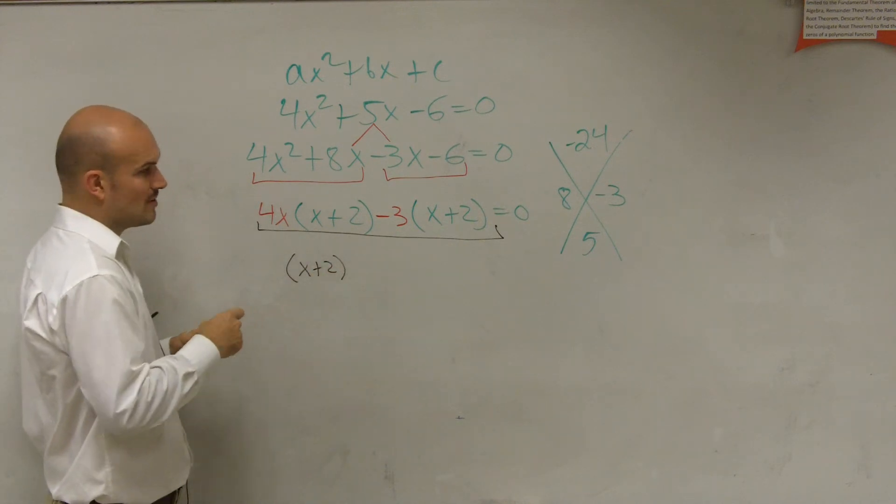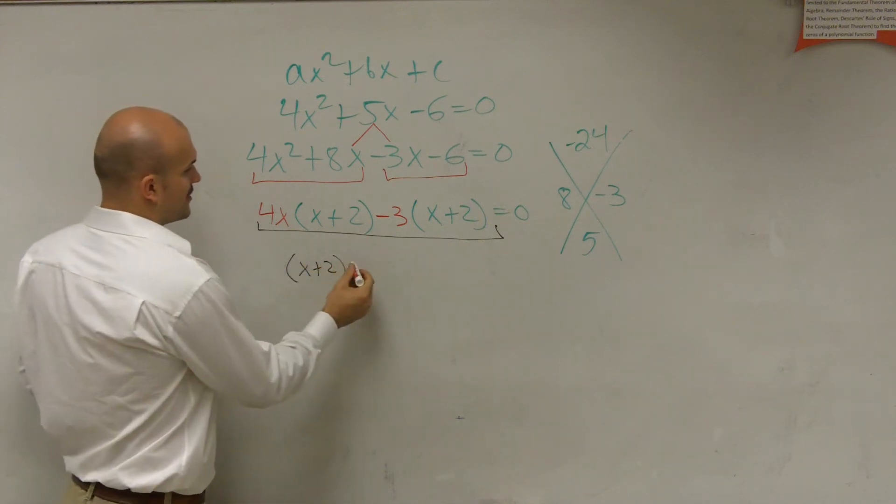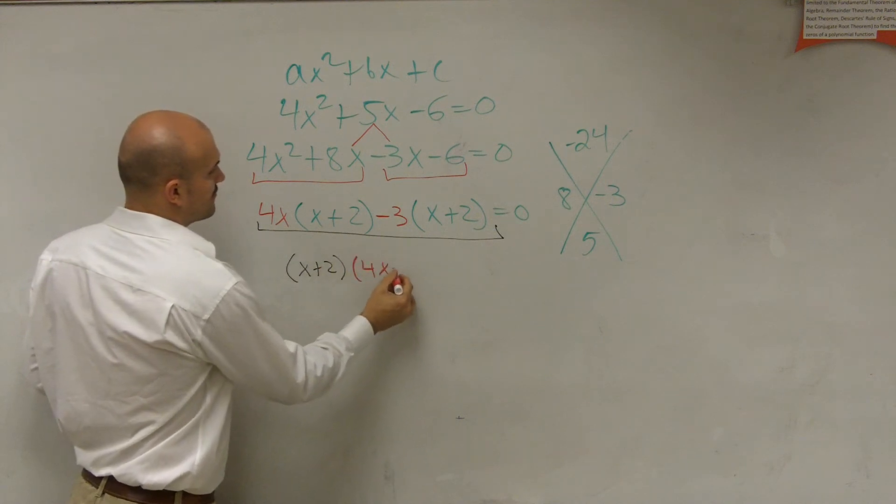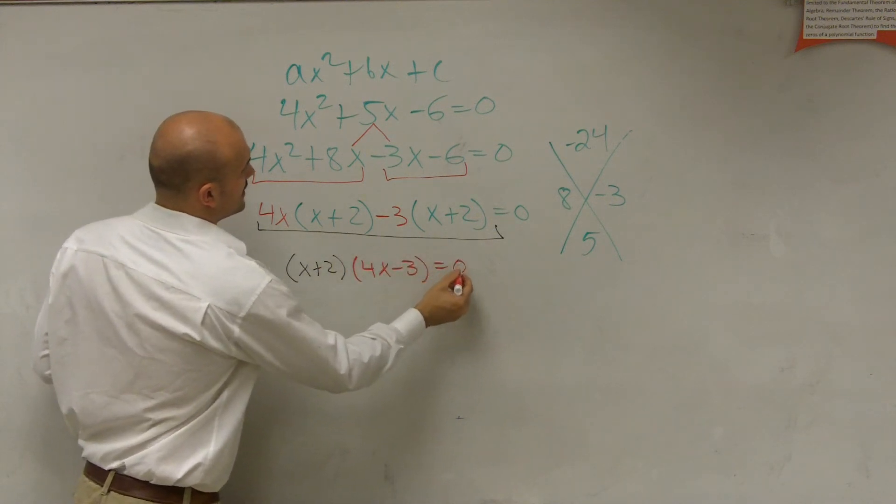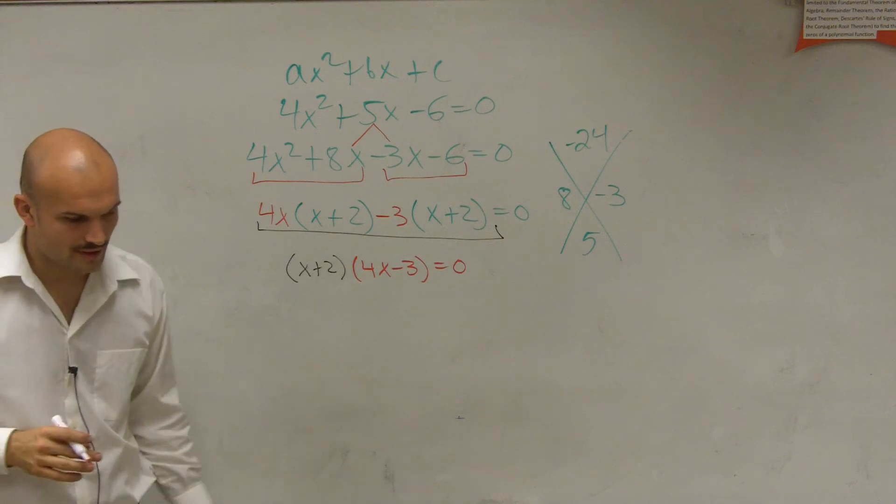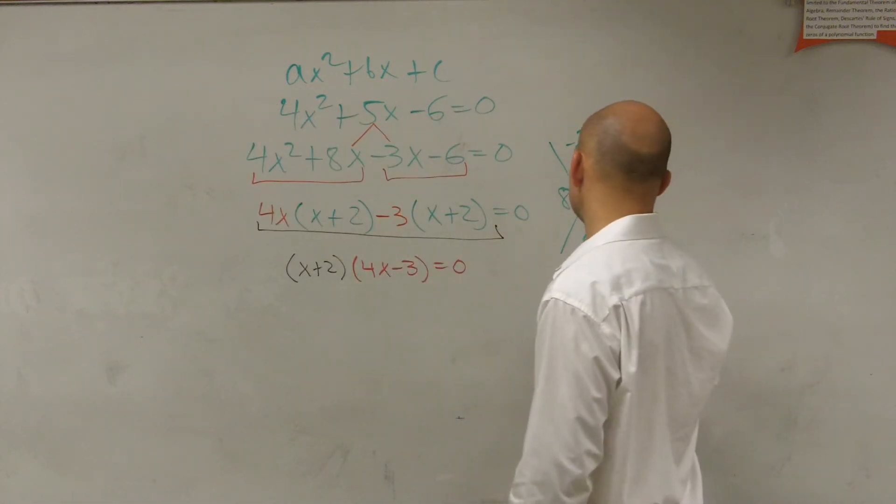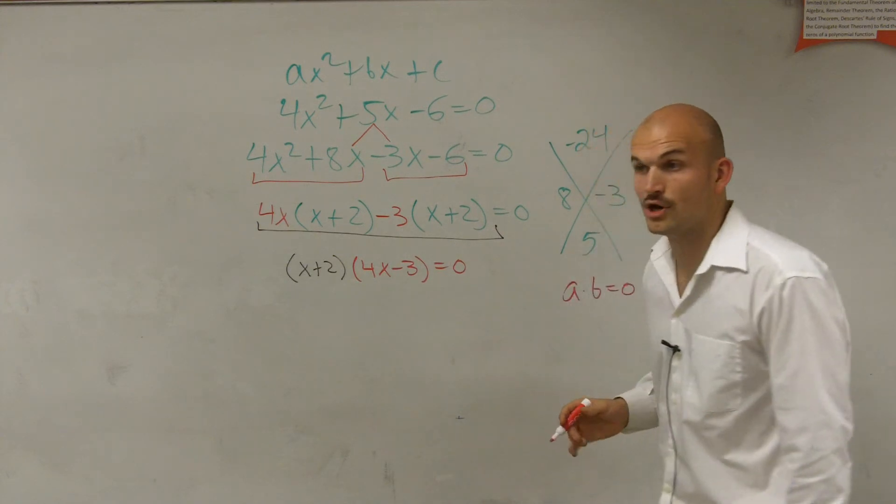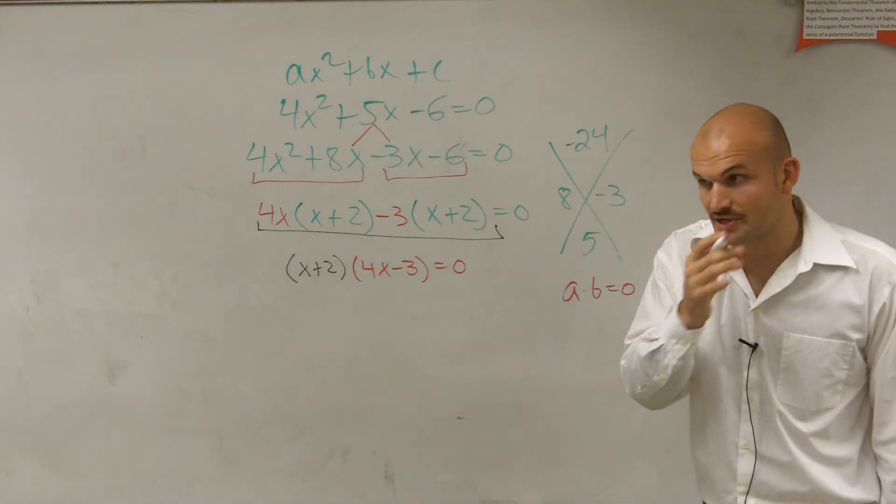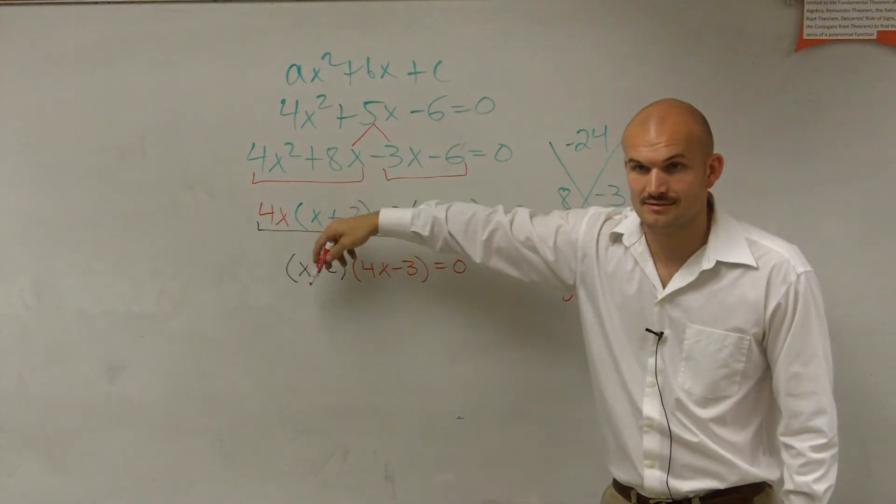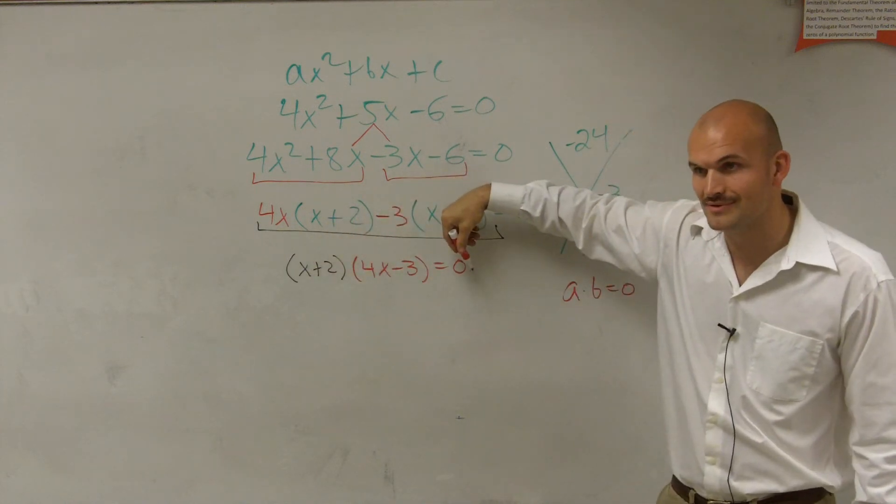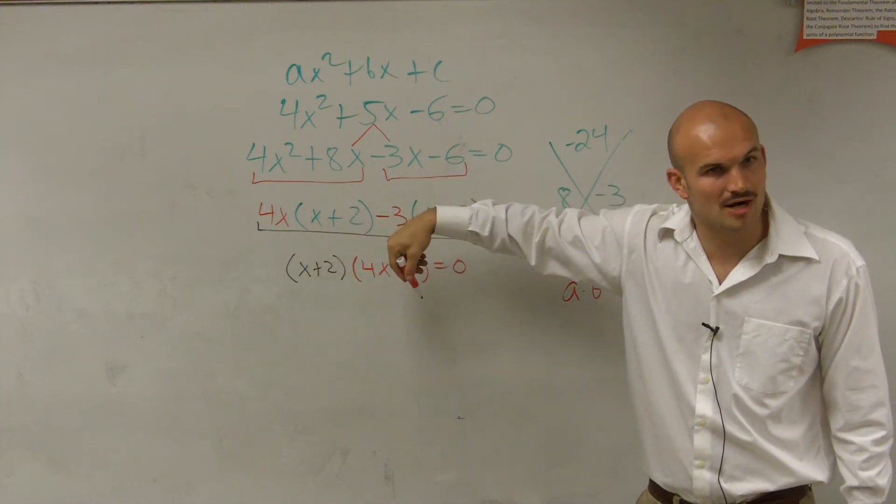And what's left over is in the red, right? So now you have x plus 2, so you're left with a 4x minus 3 equals 0. And so then what I was trying to tell you guys is a times b equals 0. That's what we call the zero product property.